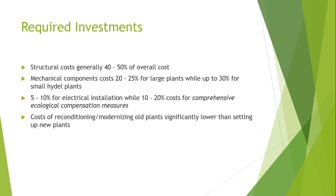For small hydropower plants, roughly 5 to 10 percent has to be set aside for the electrical installation. What remains are the miscellaneous costs, which include the planning costs, additional construction expenses, overheads, and the building interest rates — that is, the interest payments on the invested capital during the building period.